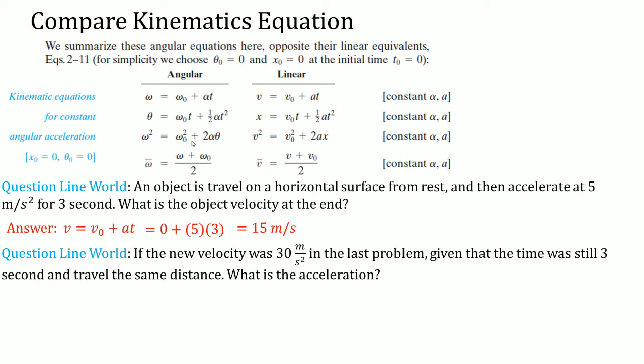You also might see something like this. If the new velocity is 30, the units are wrong. If the new velocity is 3 meters per second in the last problem, given that the time is still 3 seconds and travels the same distance, what is the acceleration? It's the same approach, but this time the new velocity was 30. You want to know what is the acceleration, but the time here is 3 seconds. Divide by 3 to both sides, you get A. A here is 10. This makes sense because the acceleration has to be faster because there's more velocity here given the same amount of time. So this is like a typical problem from chapter 2. I'm going to show you how it looks like in the circle world now.